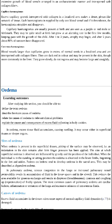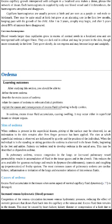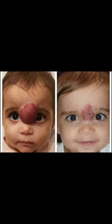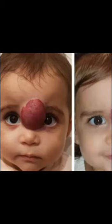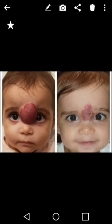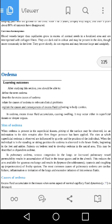Capillary hemangiomas are usually present at birth and are seen as purple or red moles, also called birthmarks. They may be quite small at birth but grow at an alarming rate in the first few months, keeping pace with the child's growth. After the first two to three years, atrophy may begin — meaning reduction in size — and after five years, about 80% of the tumors have disappeared.